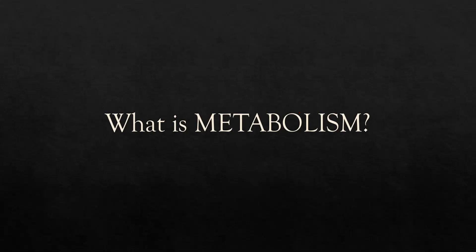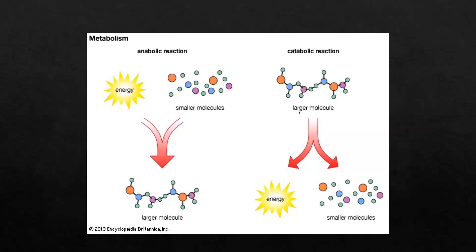There are two different types of metabolic reactions: anabolic reactions and catabolic reactions, also called anabolism and catabolism. In anabolic reactions, smaller molecules join together to form a larger molecule. In catabolic reactions, a large molecule is broken down to form smaller molecules. Both happen with the help of an enzyme.